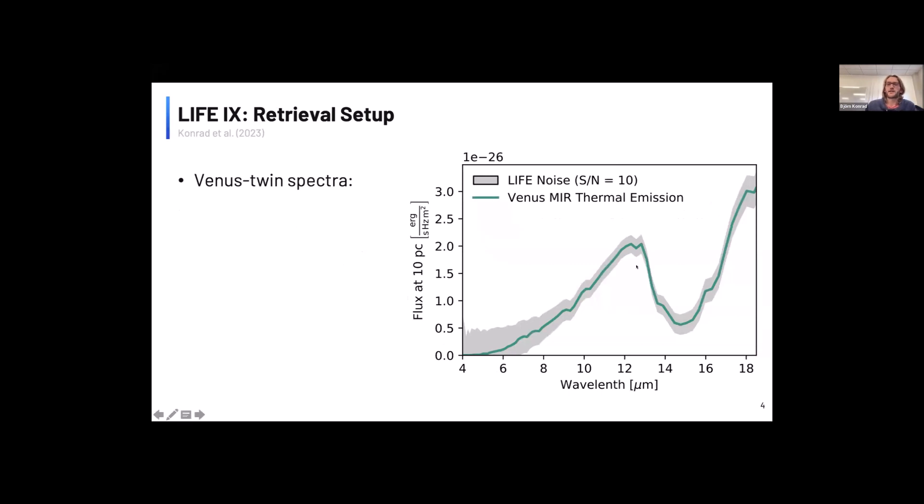Then after calculating the spectrum, we use LifeSim to generate different LIFE observations of this Venus-like exoplanet. These observations cover the wavelength range from 4 to 18.5 micron. We consider two different spectral resolutions, namely 50 and 100, so the baseline case and the improved spectrum.